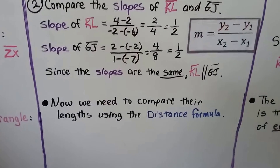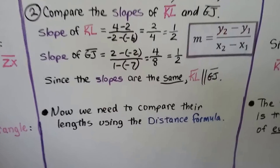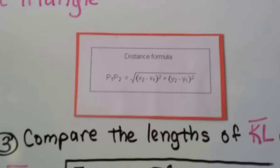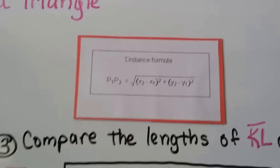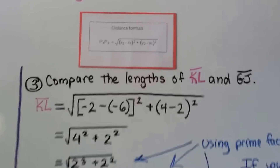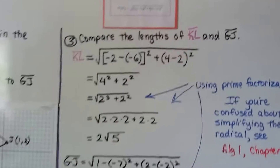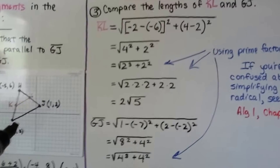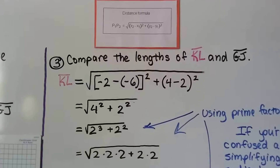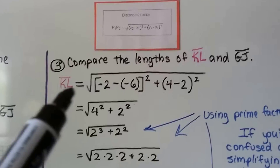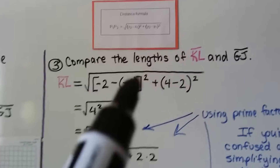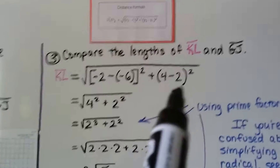Now we need to compare their lengths using the distance formula. You remember the distance formula for the distance between two points — we use the x₁ and y₁ values and the x₂ and y₂ values. So we're going to compare the lengths of segment KL and GJ using the distance formula. Using the coordinates for segment KL, we get the square root of (negative 2 minus negative 6) squared plus (4 minus 2) squared.